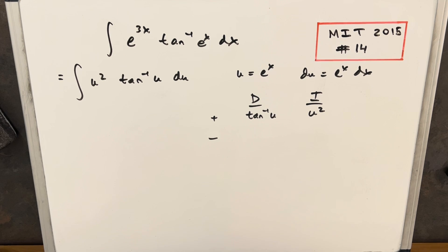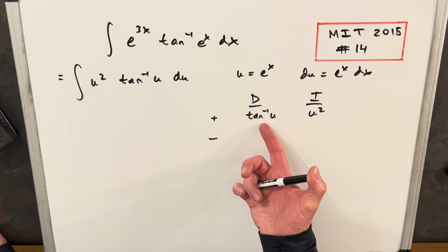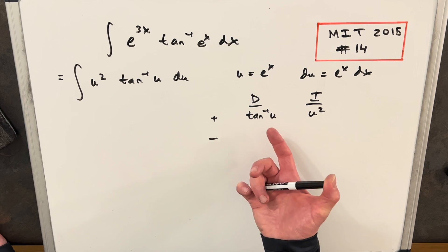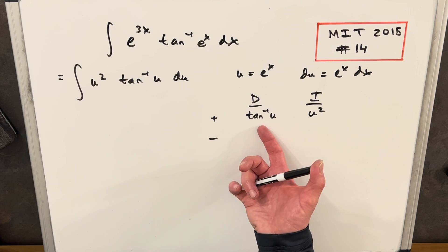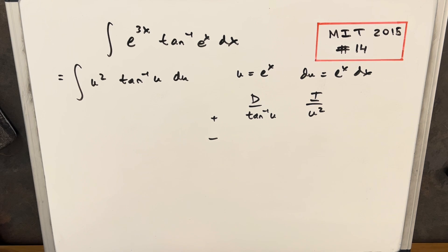We'll do integration by parts using the DI method or tabular integration. So what I'm going to do is I want to differentiate arctan of u just because I don't have a good way to integrate that. So we'll differentiate that and we'll integrate our u squared.